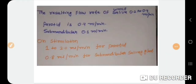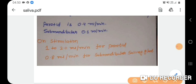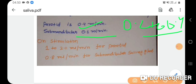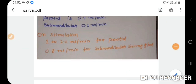The flow rate of whole saliva is 0.2 to 0.4 ml per minute. The parotid gland contributes 0.4 ml per minute and the submandibular gland 0.1 ml per minute. When stimulated, the flow rate increases — the parotid reaches 1 to 2 ml per minute and the submandibular 0.8 ml per minute.